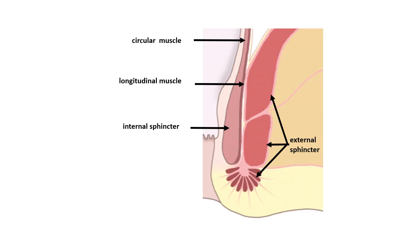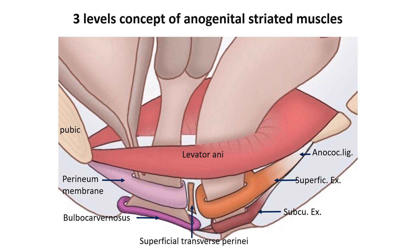Anogenital muscles: the internal sphincter of the anal canal is a continuation of the circular muscle of the rectum. The external sphincter is a continuation of levator ani, as we know well. But after multiple cadaver dissections, they found that the external sphincter has only two components — the subcutaneous and superficial parts. The deeper part mentioned in many texts has no distinct demarcation from the levator ani; they propose it is nothing but the levator ani itself. To simplify further, they give the concept of three levels of anogenital striated muscle: upper is levator ani, middle is superficial external sphincter, and lower is subcutaneous external sphincter.